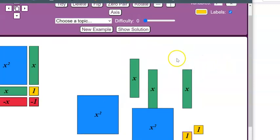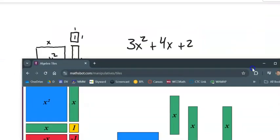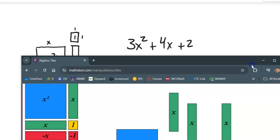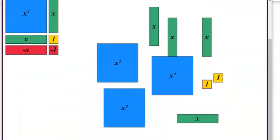And notice that with this, I have 3x squareds, I have 4x's, it doesn't matter how they're aligned, and I have two ones. So I could represent this polynomial, or this statement, with that shape, that collection of shapes.